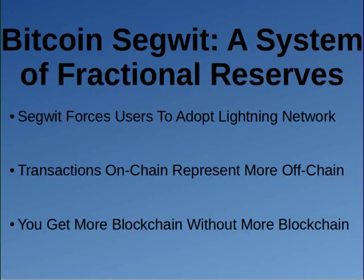Hey everybody, it's the Crypto Anarchist here and I'm bringing you guys another video on cryptocurrencies. In today's video I'm going to talk about how Bitcoin SegWit turns its blockchain into a fractionally reserved blockchain. Basically what Bitcoin SegWit does is it allows the blockchain to expand beyond its actual size.